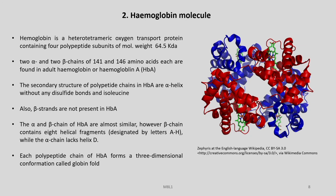Let us have a look at the hemoglobin molecule which carries oxygen and is responsible for this disorder. This is a heterotetrameric oxygen transport protein containing 4 polypeptide subunits of molecular weight 64.5 kilodalton — 2 alpha and 2 beta chains of 141 and 146 amino acids — which are found in the adult hemoglobin or hemoglobin A. The secondary structure of polypeptide chains in HbA are alpha helix without any disulfate bonds, and beta strands are not present in HbA.